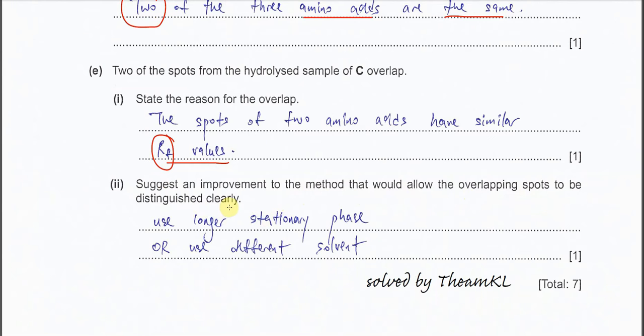This one is very easy to solve. We just need to use a longer paper. When we use a longer paper, then the solvent front, we can adjust to a longer distance. So longer distance, then it can separate further. So that's why a longer stationary phase or longer chromatography paper can be used for a better separation.